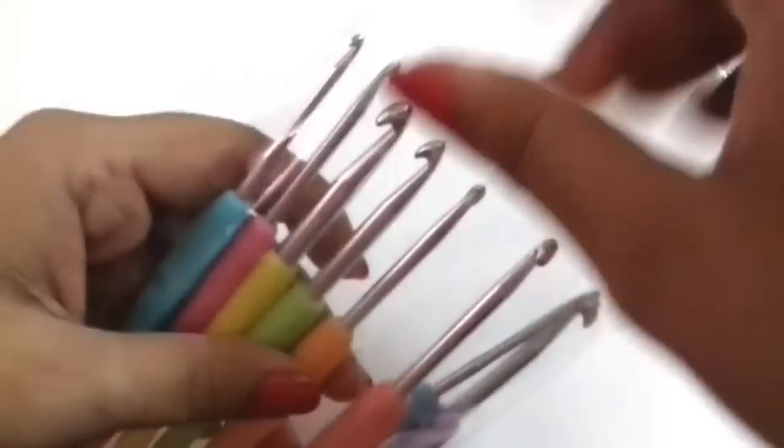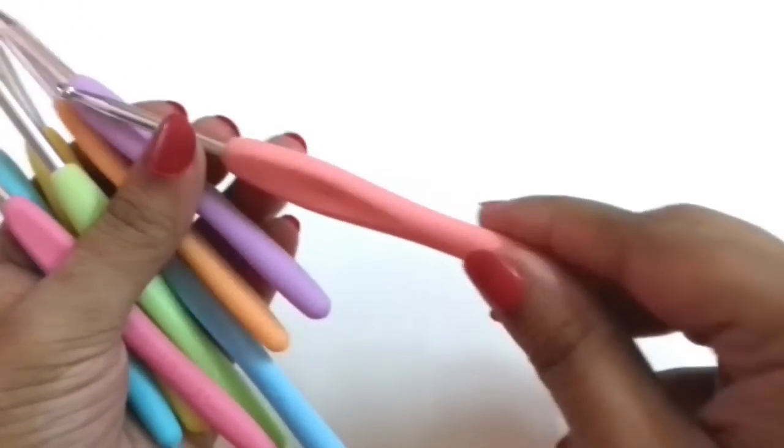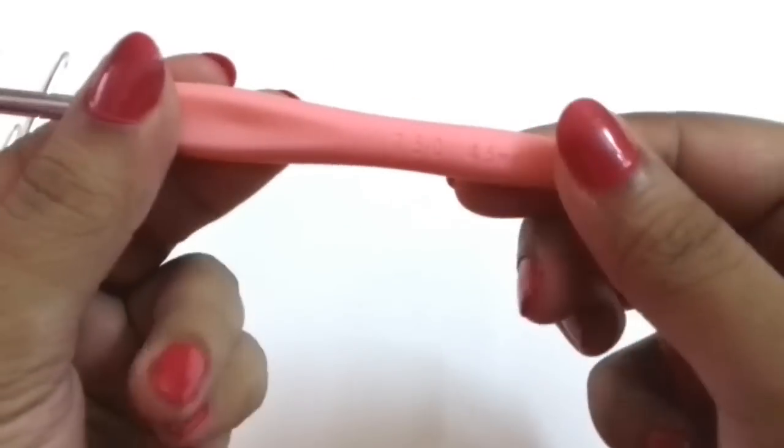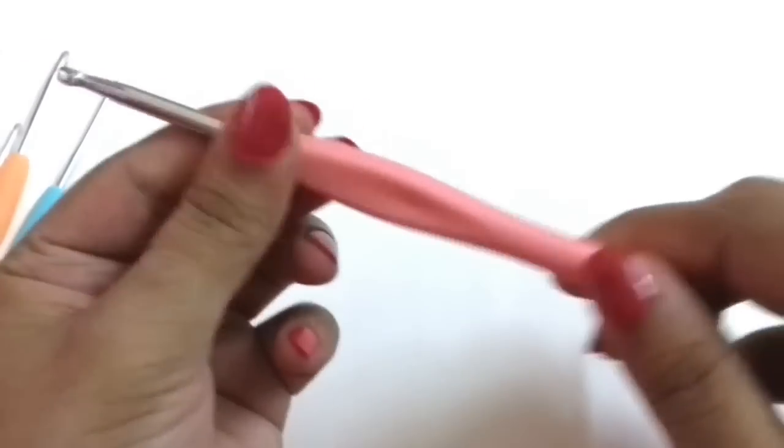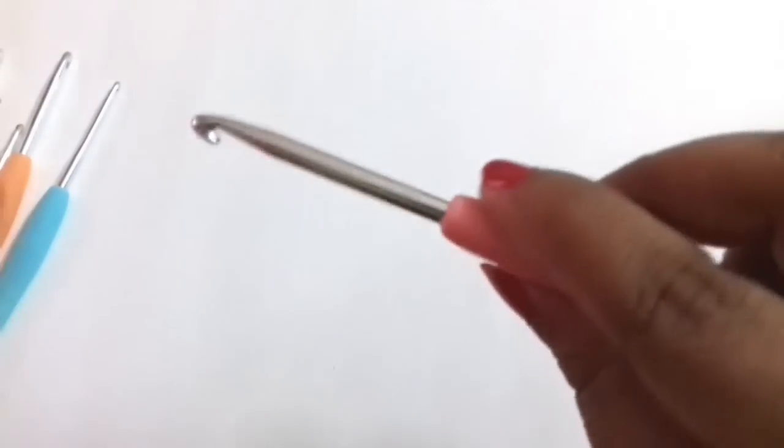First we have 8 crochet hooks in different colors and different sizes. In the picture it feels like these have very cushiony rubber grips but these are made of very soft plastic with this matte finish and steel crochet hook which is also very good quality.